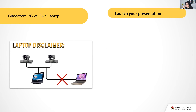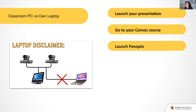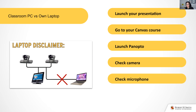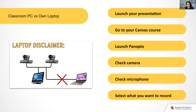No matter which you use, there are basically six things you want to do for a Panopto recording. First, launch your presentation and have everything ready. Then go to your Canvas site, open your course, go into Panopto Recording, and click the button that says 'Launch Panopto.' When it starts recording, check your cameras — room cameras or laptop camera. Next, check the mic, which is the most important thing. They can hear you even if the camera faces the wall, so make sure you check your microphone.